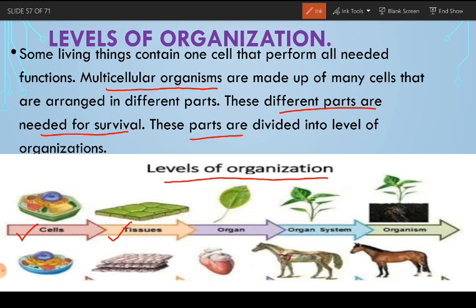Tissues combine together and form organs. Many organs assemble and make up an organ system. Many organ systems working together make up a complete organism. So the levels of organization are: first, cell; second, tissue; third, organ; fourth, organ system; and fifth, organism.